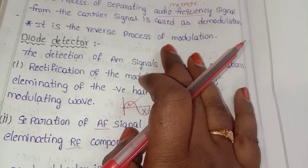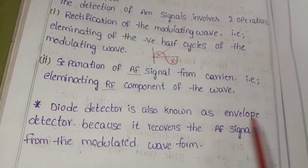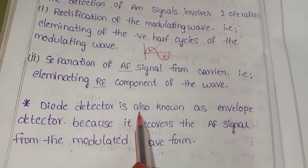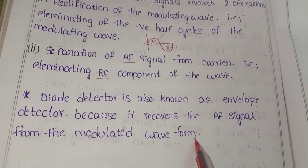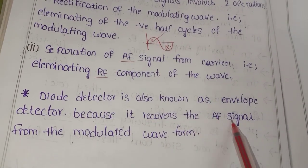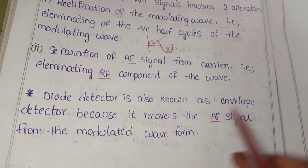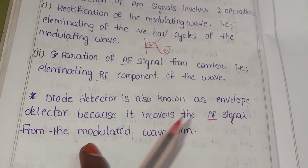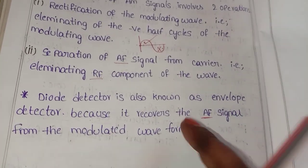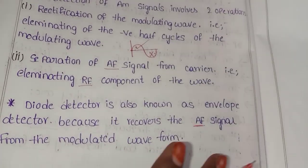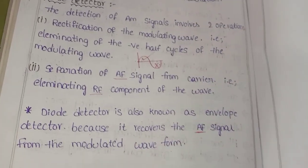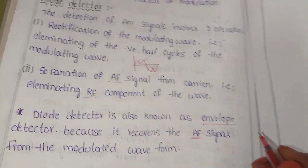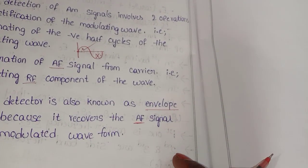The Diode Detector is also known as the Envelope Detector. The Envelope Detector records the AF signal — that is, the audio frequency signal — from the modulating waveform. It recognizes and records the AF signal, which is the modulating signal. The Envelope Detector works with the high frequency AM signal.